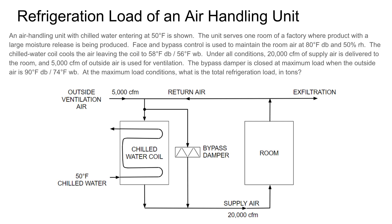Refrigeration load of an air handling unit. An air handling unit with chilled water entering at 50 degrees is shown. The unit serves one room of a factory where product with large moisture release is being produced. Face and bypass control is used to maintain the room at 80 degrees dry bulb and 50% relative humidity. The chilled water coil cools the air leaving the coil to 58 degrees dry bulb, 56 degrees wet bulb. Under all conditions, 20,000 CFM of supply air is delivered to the room and 5,000 CFM of outside air is used for ventilation. The bypass damper is closed at maximum load when the outside air is 90 degrees dry bulb, 74 degrees wet bulb. At the maximum load conditions, what is the total refrigeration load in tons?